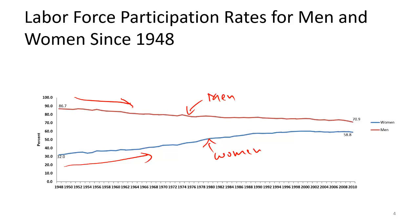One of the reasons men's labor force participation rate declined is because more and more men are going to college — and if somebody is a full-time student, they are not part of the labor force. So in a way, it's a positive thing that relatively fewer men are in the labor force, meaning more men are going to college. At the same time, women's labor force participation rate is increasing because of societal changes observed since World War II.